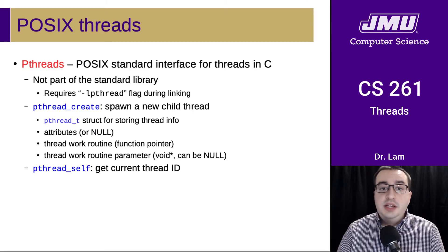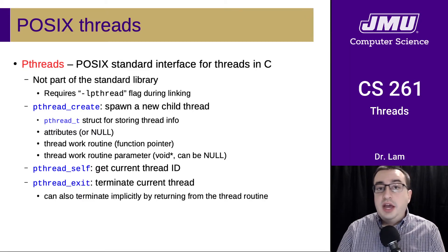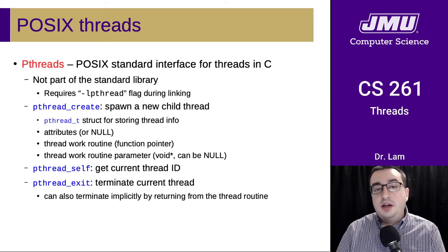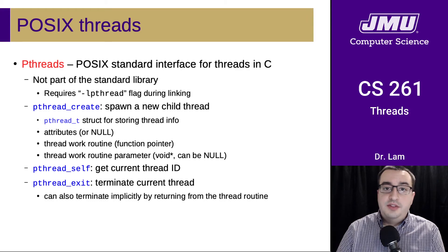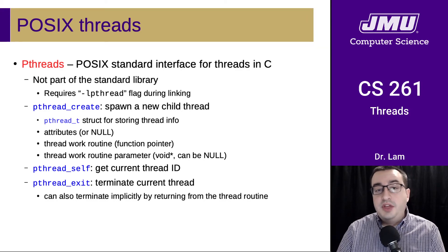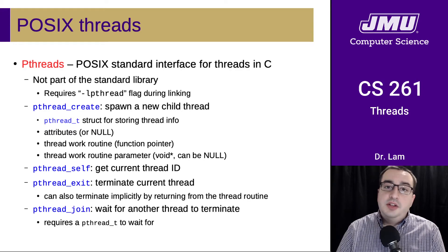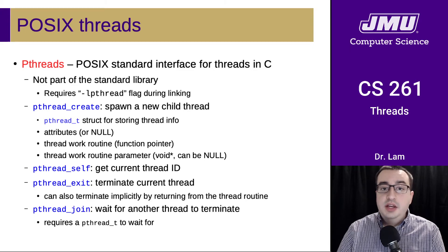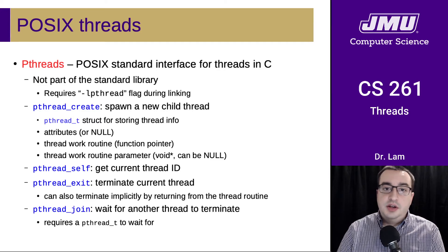You can get your current thread ID using pthread_self. You can exit a thread using pthread_exit, although in a peer thread you can also end it simply by returning from the thread routine. Finally, there is pthread_join, which can be used in a thread to wait for another thread to terminate, using the pthread_t struct referenced earlier to identify the proper thread.